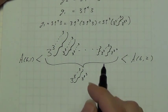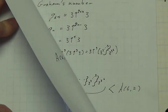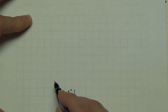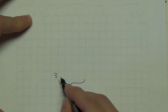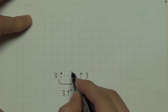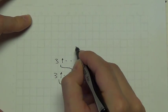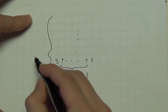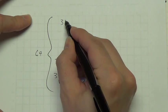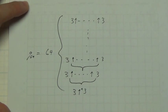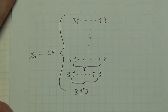And so G64 — Graham's number — is three with four-up-arrow three, and there are this many arrows, built up through 64 steps of that recursive process. The largest number that has ever been used in mathematics.